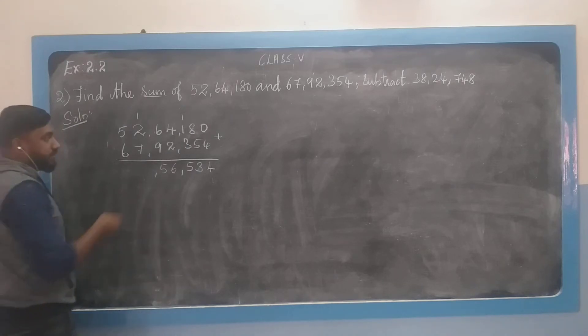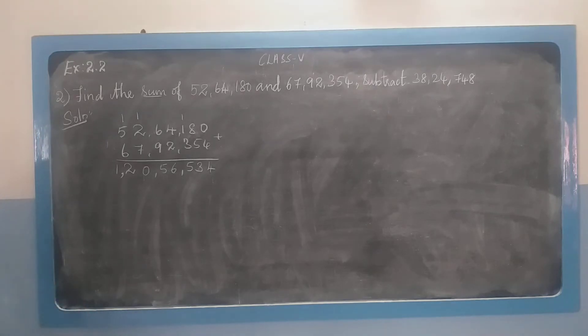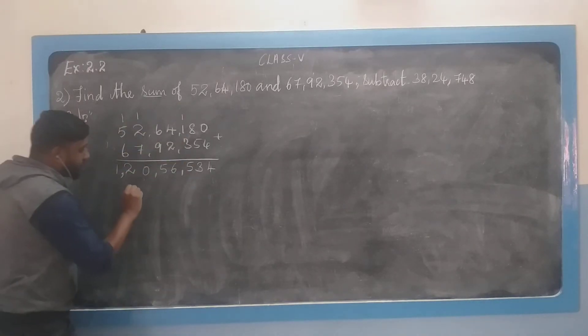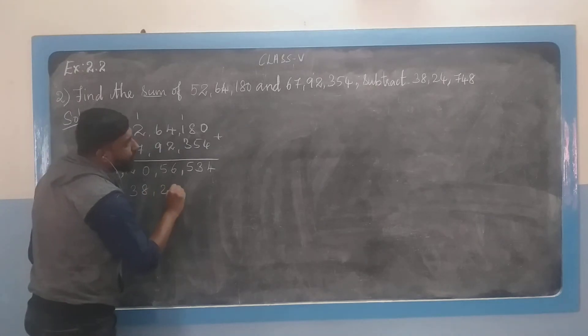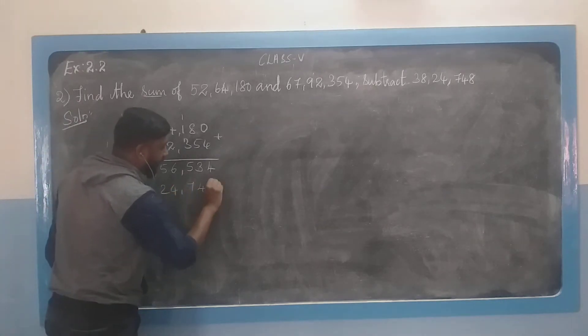1 plus 4 is 5, 5 plus 7 is 12. Write 0, 1 remainder. 1 plus 5 is 6, 6 plus 6 is 12. So here the answer is 1,205,634. Now the second step: subtract the third number from this. So 38, 24, 7, 4, 8.